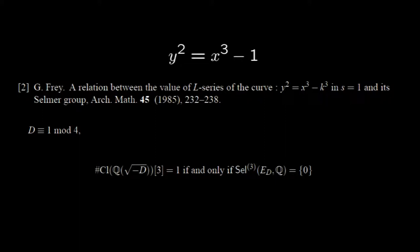In 1988, Nakagawa and Horie proved a refined result of the famous theorem of Davenport and Heilbronn. Their theorem implies that there is a positive proportion of square-free integers d such that d congruent to 1 mod 4 and the 3-part of the class group is trivial.